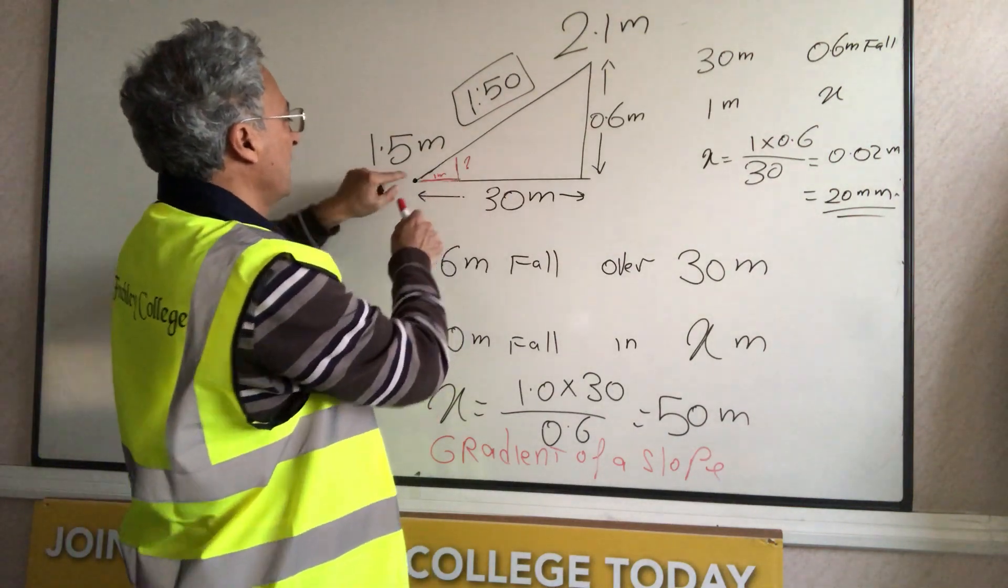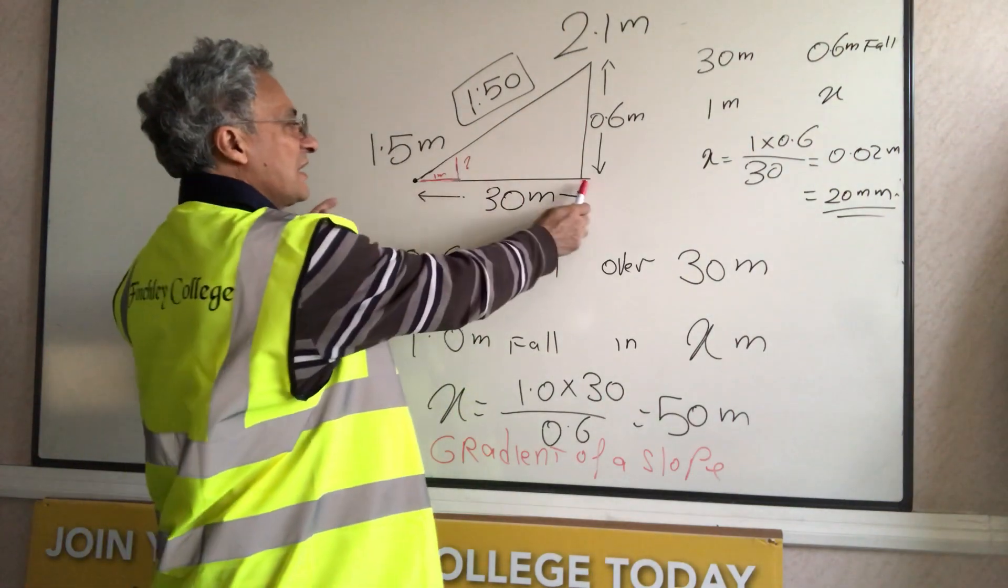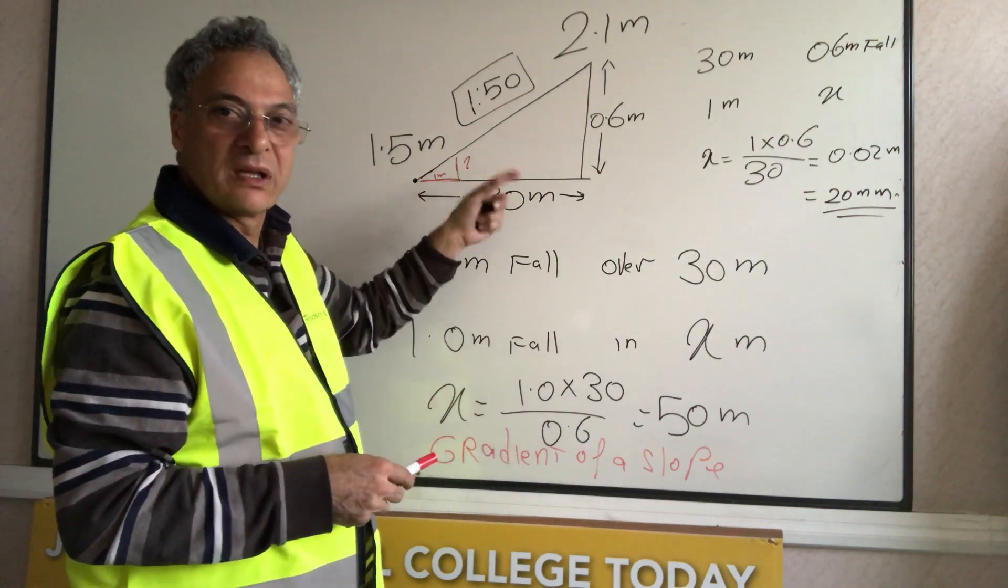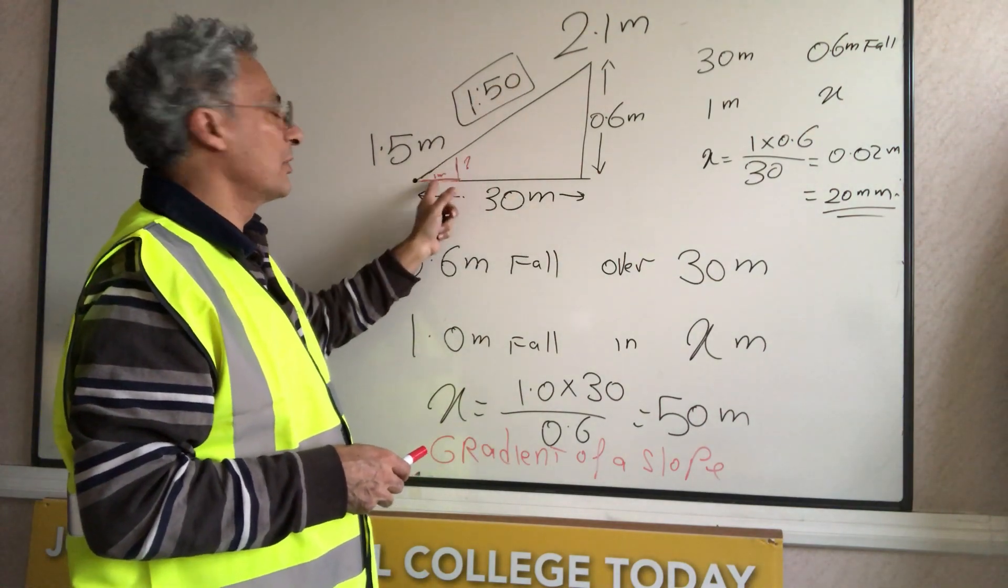So, as long as I have the starting level, and I have the end level, and as long as I have the overall horizontal distance between the two, I can calculate the gradient, 1 in 50, and I can calculate the fall per meter.